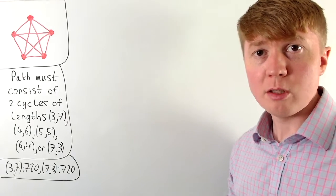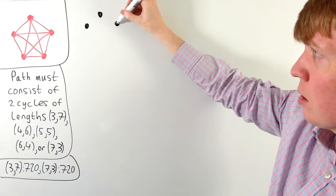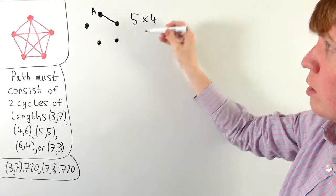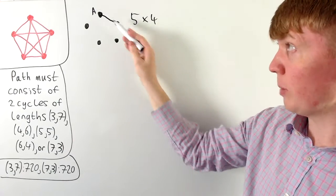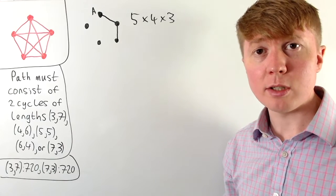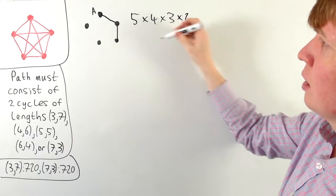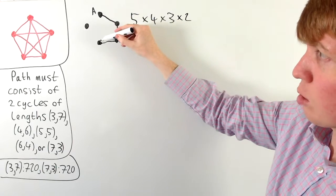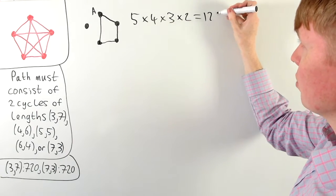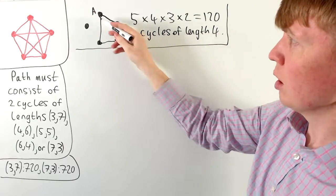Next, we count all ways of doing this with a cycle of length four followed by a cycle of length six. Drawing the graph again, we have five options for our first vertex A, four choices for the second vertex, three choices for the third vertex — we can't return to A here or we'd get a cycle of length three — then only two options for the fourth vertex, and then we must return to A to complete a cycle of length four. So we have five times four times three times two equals 120 cycles of length four.